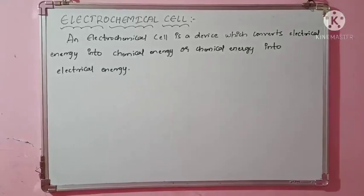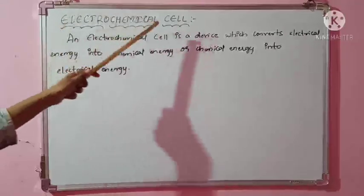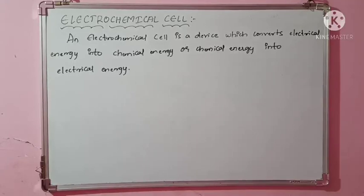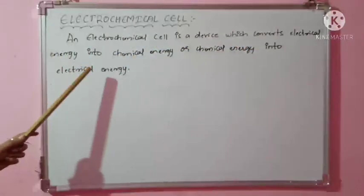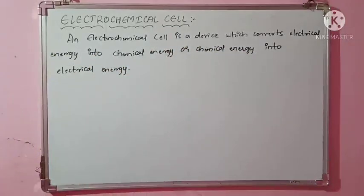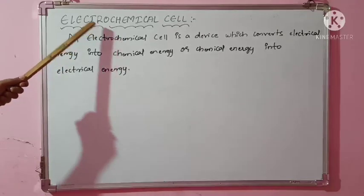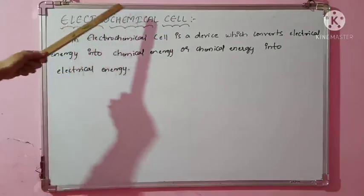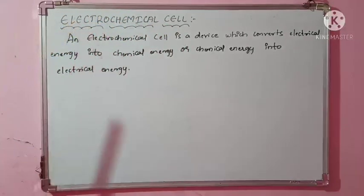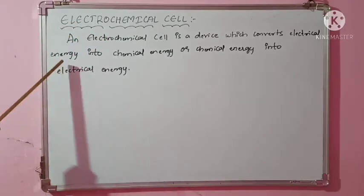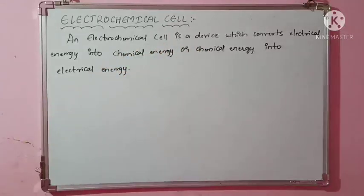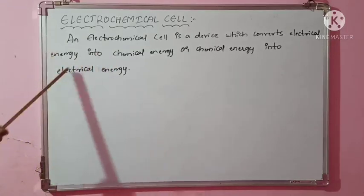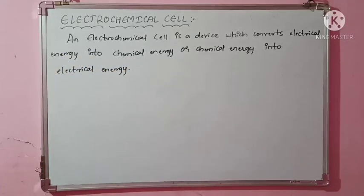Hello everyone, this is Shweta, welcome to my classes. Today we will be understanding the concept of electrochemical cell. An electrochemical cell is a device which converts electrical energy into chemical energy, or chemical energy into electrical energy. If you supply electricity then a chemical reaction takes place, or a chemical reaction will produce electricity. This is what an electrochemical cell does.